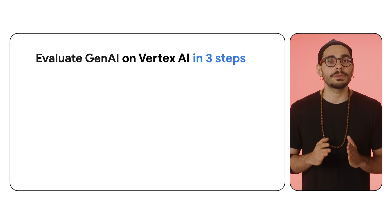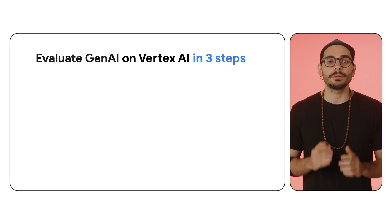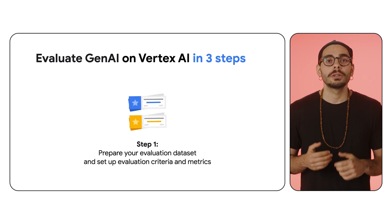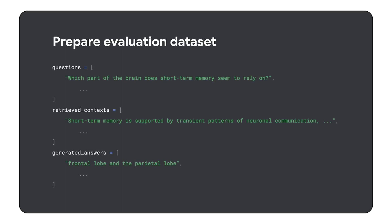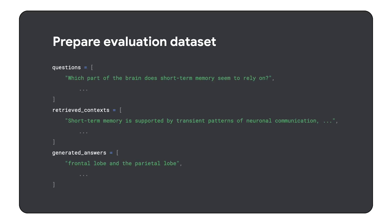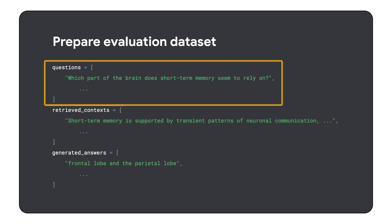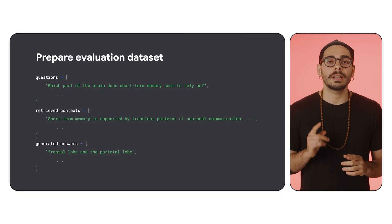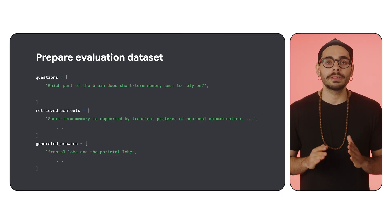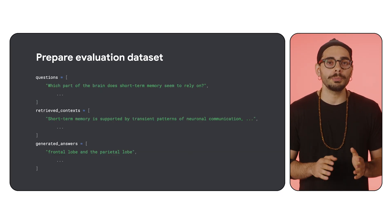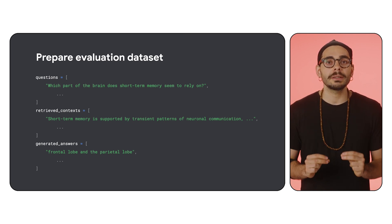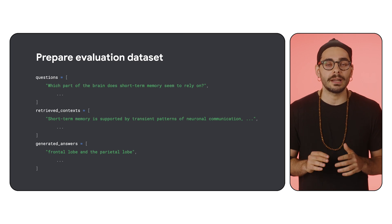The evaluation process using Generative AI evaluation services on Vertex AI is straightforward, broken down in three simple steps. First, you prepare your evaluation dataset and define your custom metrics. Here is an example of what a prepared evaluation dataset might look like, with question, context, and corresponding generated responses. Craft your dataset carefully — include diverse examples, model outputs, correct answers, and any tool calls if needed. The structure depends on your evaluation method, metrics, and task.